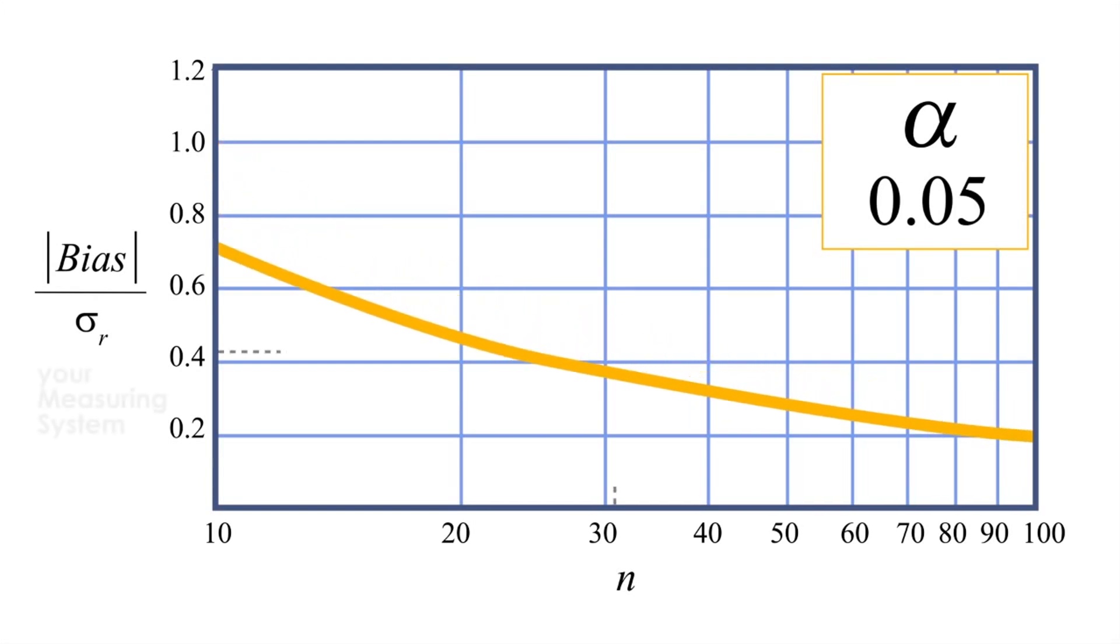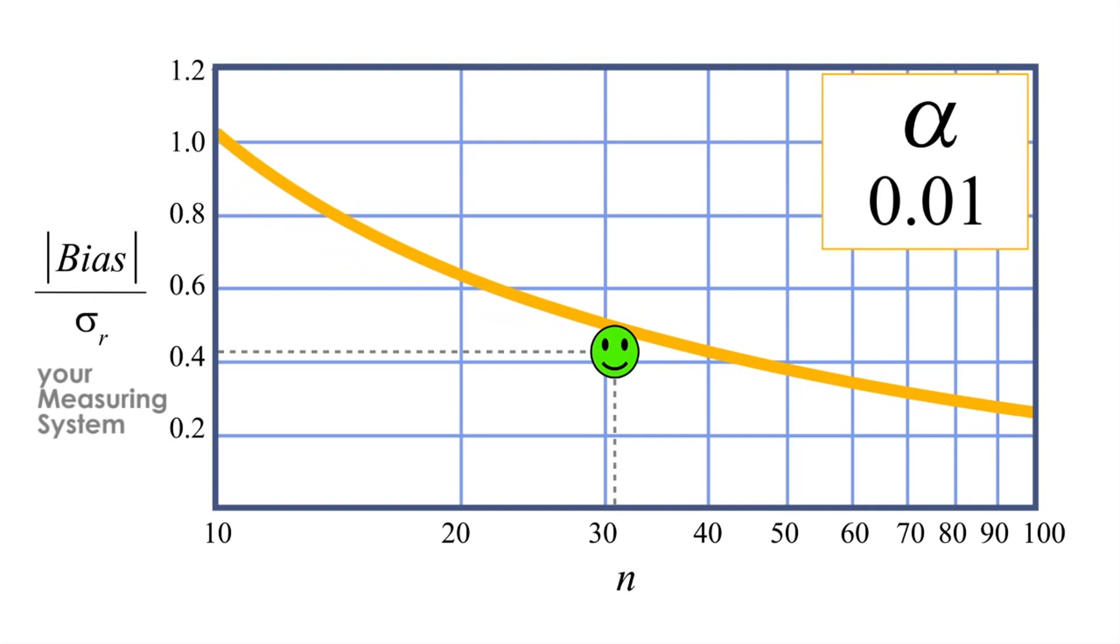In other words, this says that the more confident we want to be that the bias is low enough, the higher we will allow the bias to be. If this sounds as nonsense to you, yes, you are correct.